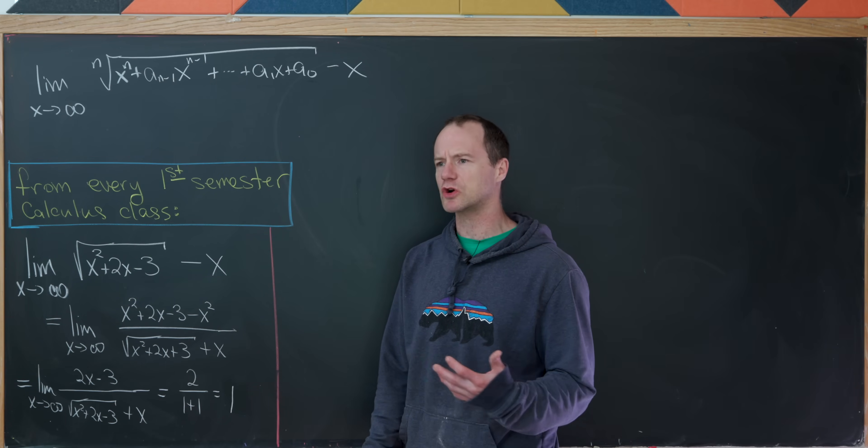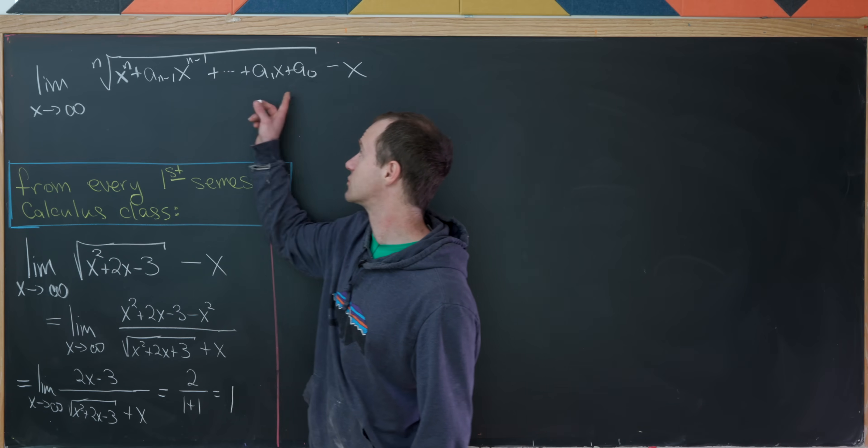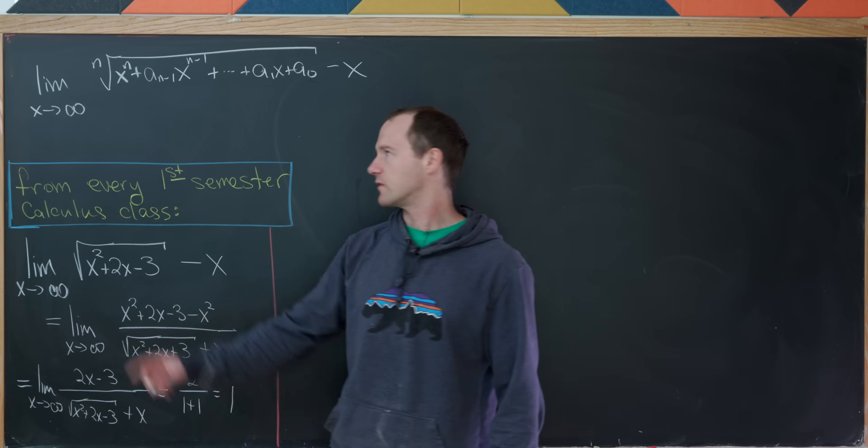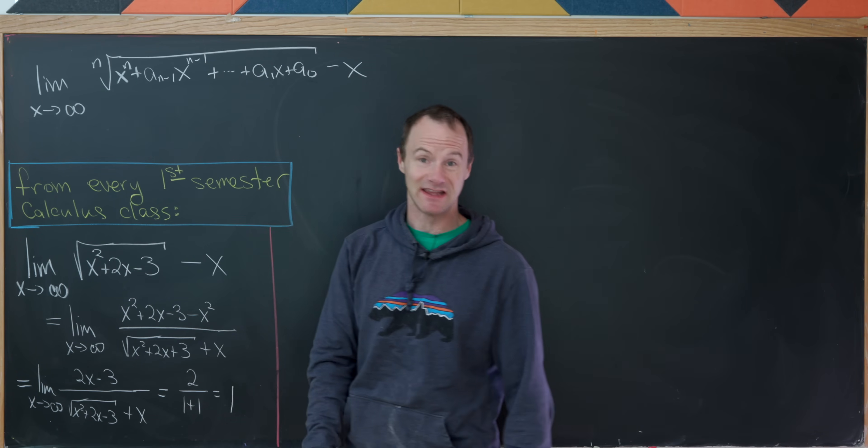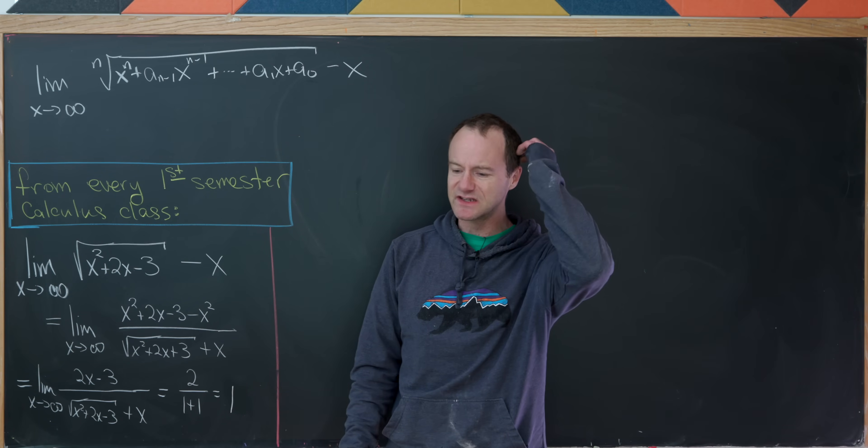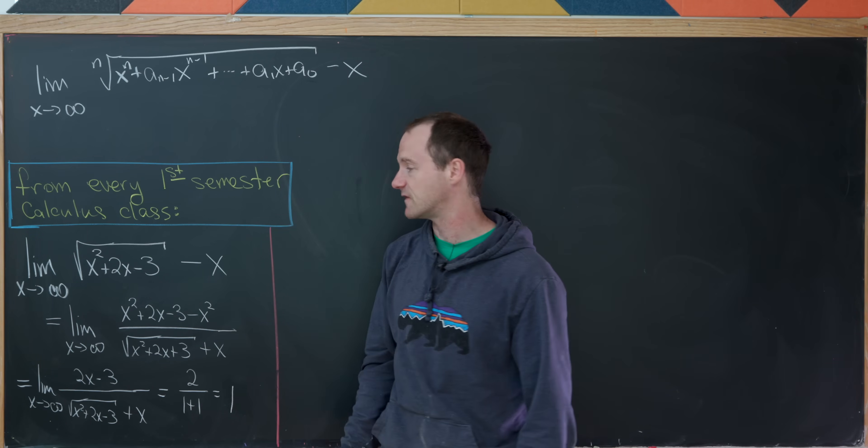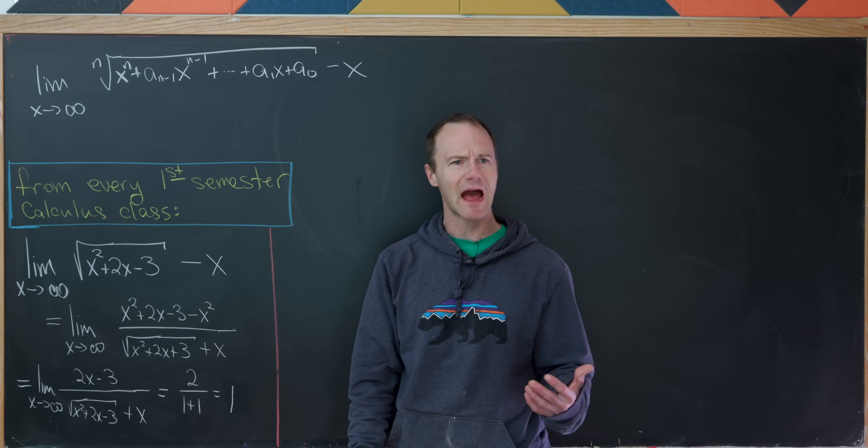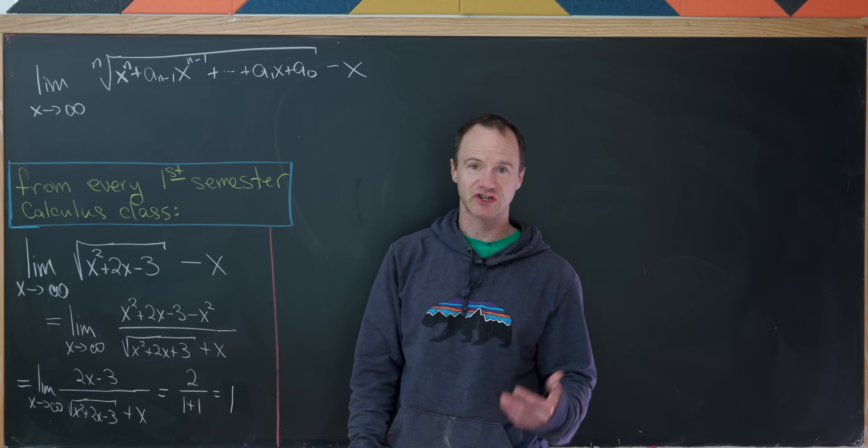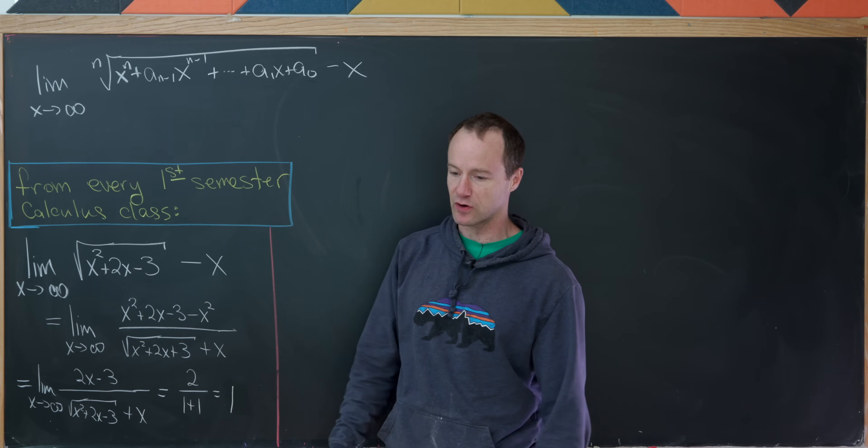But what if we were to look at this more generally, where we have the nth root of an n degree polynomial where the leading term is just x to the n with a coefficient of 1 there, minus x? So this is also an indeterminate form of the same type, infinity minus infinity, and perhaps we could rationalize the numerator, but that's a bit trickier. So we're going to take a different approach.